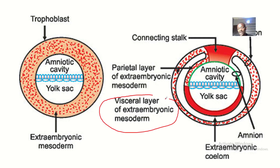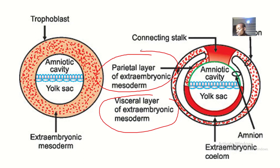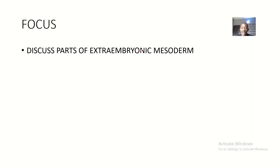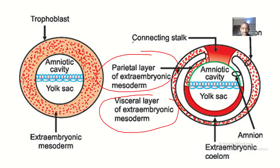The two parts are the visceral layer of the extra embryonic mesoderm and the parietal layer of the extra embryonic mesoderm. But there are some other things we'll be talking about, so that when you are asked to talk about the parts of the extra embryonic mesoderm, you have all your facts intact.